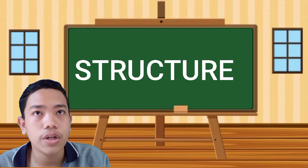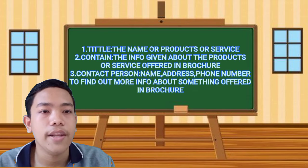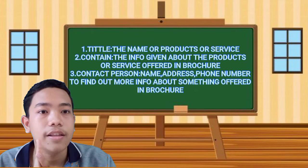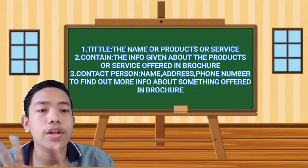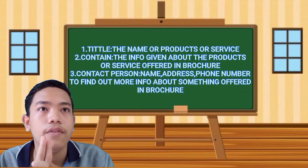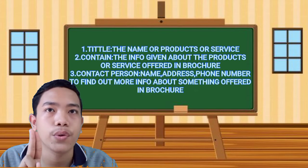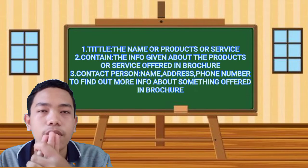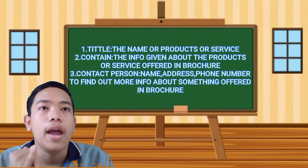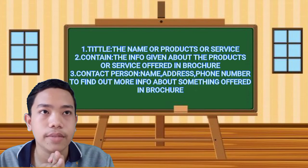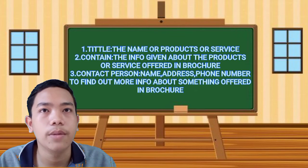Now let's jump to the structure of a brochure. On the brochure, we can find: first, the title, which contains the name of the product or service; and also the content or body, which is information given about the products or service in the brochure. The last is the contact person, where we can find the name, address, or phone number of a person to find out more information.